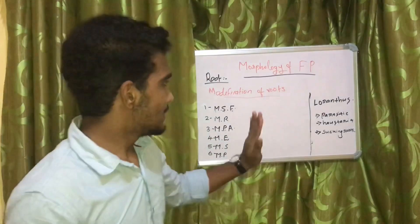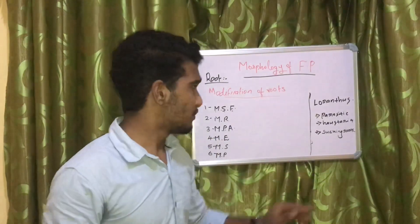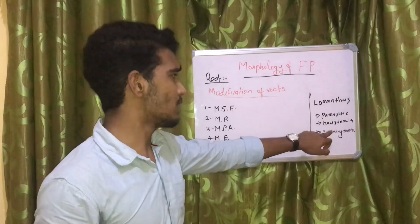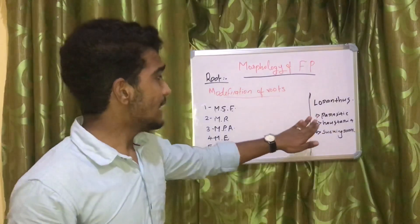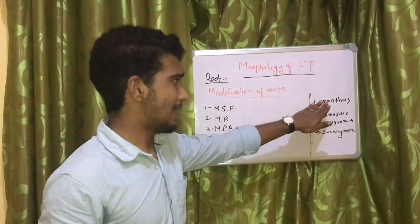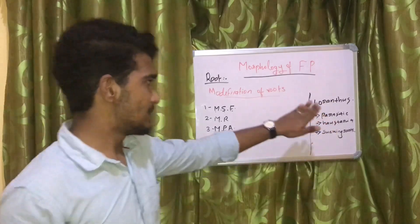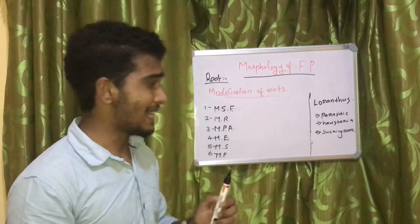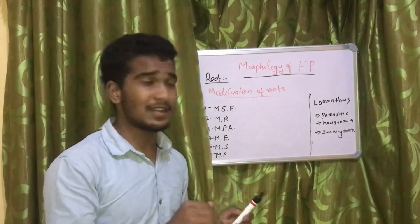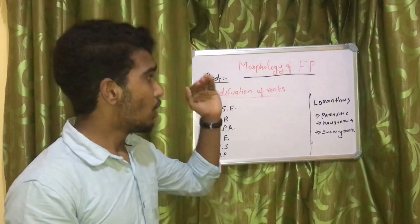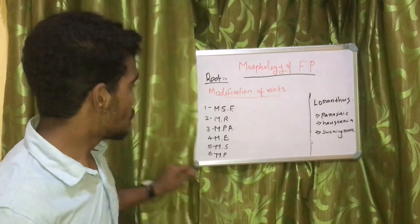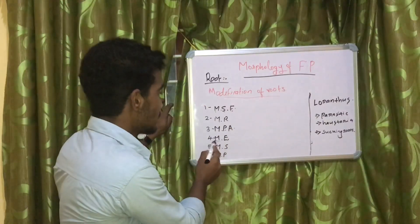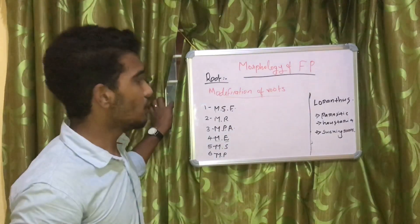In modifications for parasitic adaptation, such plants have special types of roots called parasitic roots, haustoria, or sucking roots. These types of roots are found in Loranthus. Loranthus plants grow on host plants and absorb nutrients and minerals from the host plants.